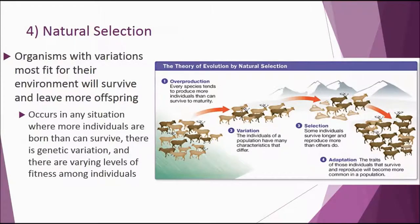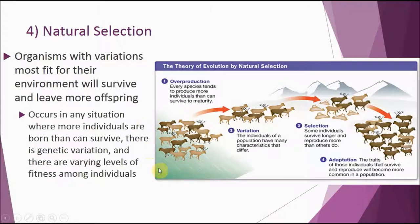Natural selection is pretty easy to understand. Essentially, nature selects those organisms with variations better suited for their environment, and they're going to leave more offspring. That means beneficial traits become more common in a population. Looking at this image, we can see that there are always more individuals born in a population than can survive. Some of those individuals have differences — some have horns, some are lighter or darker colors — and this works in many examples beyond just color.